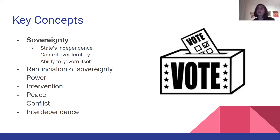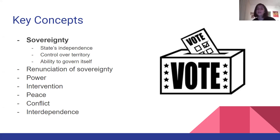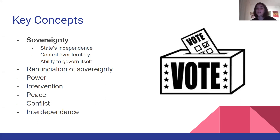So key concepts. In global politics, we have seven main key concepts, such as sovereignty, unification of sovereignty, power, intervention, peace, conflict, and interdependence. But we're going to be focusing on sovereignty. In order to understand IGOs and how borders work, we need to understand sovereignty.